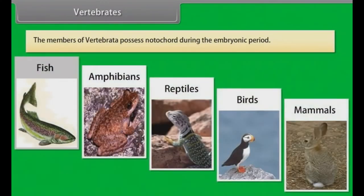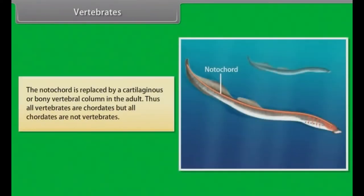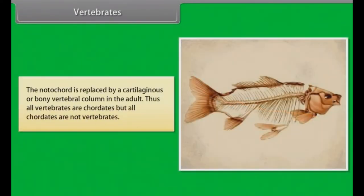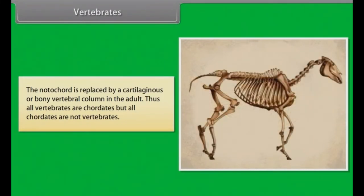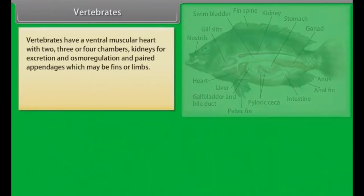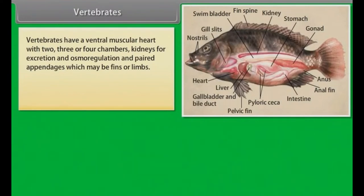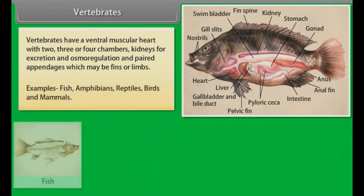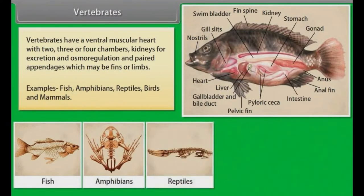Members of Vertebrata possess a notochord during the embryonic period. The notochord is replaced by a cartilaginous or bony vertebral column in the adult. Thus all vertebrates are chordates, but not all chordates are vertebrates. Vertebrates have a ventral muscular heart with two, three or four chambers, kidneys for excretion and osmoregulation, and paired appendages which may be fins or limbs. Examples: Fish, Amphibians, Reptiles, Birds and Mammals.